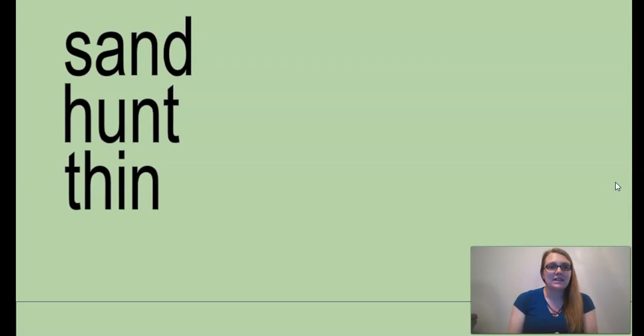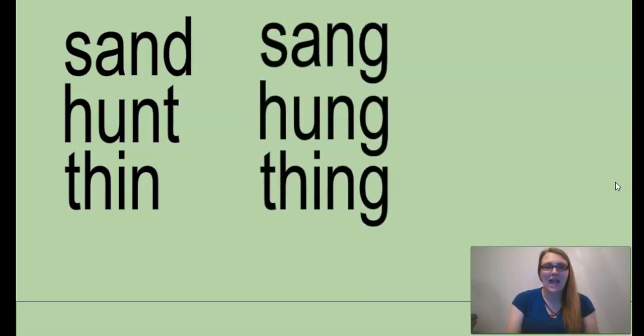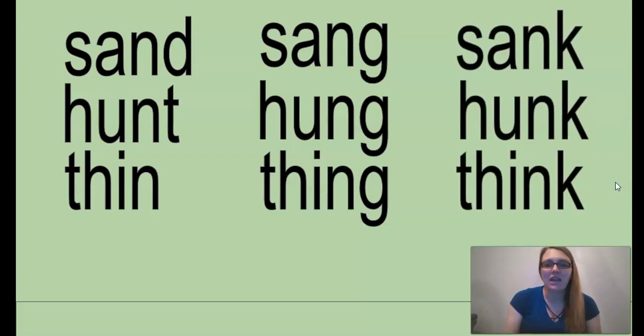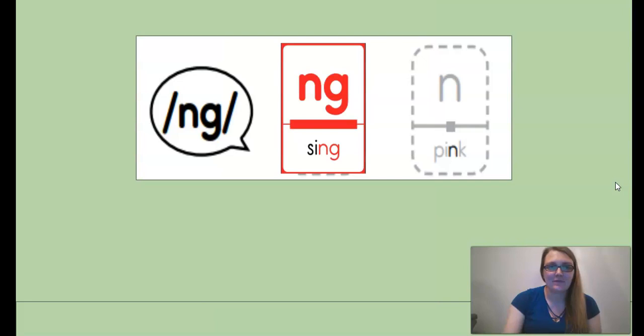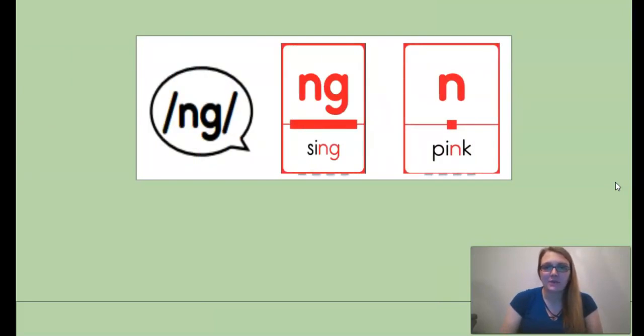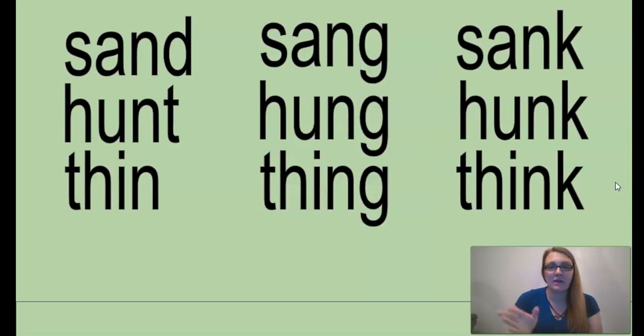Okay, and our new spelling words for this week. Let's see. We have sand, hunt, and thin. They all have the n sound spelled with a single n. Next, we have sang, hung, and thing. They all have the n sound with the ng. And we have sank, hunk, and think all with a nk and k. Pink. The n in pink is a single n. So we're adding that to our ng page, and that's reflected in our spelling words for this week.